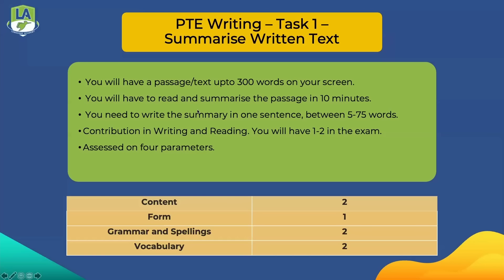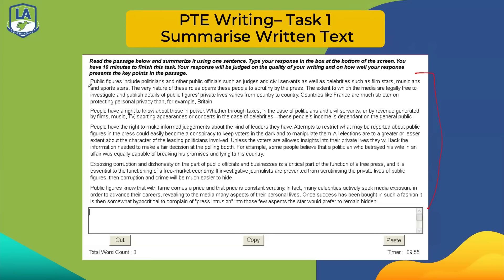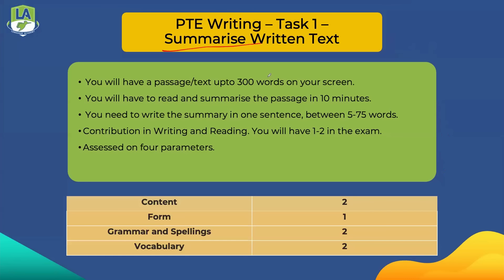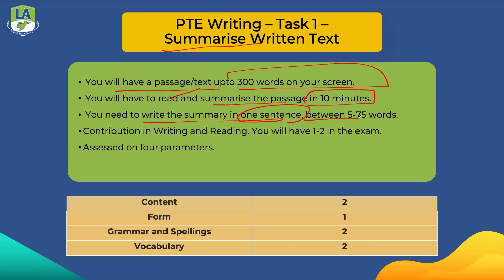As soon as you finish your speaking module you jump into the writing module. The first question is Summarize Written Text. You'll get a passage on your screen — it can be different paragraphs or a single paragraph, up to 300 words long. You have to read the passage and write a summary in one sentence between 5 to 75 words. You're given 10 minutes and must write only one sentence with one full stop. This task gives you points in writing and a few in reading; you'll get one or two of these in the test.